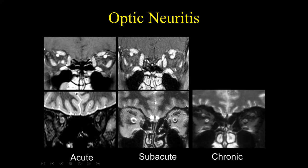Optic neuritis is associated with multiple sclerosis, and the imaging findings are somewhat similar. Acute multiple sclerosis indicates active inflammation and eventually often goes on to form gliosis — similar to what we see with optic neuritis. In the subacute phase of optic neuritis, we don't see any enhancement at all, but we do see abnormal signal involving the optic nerve and increased CSF surrounding it. The caliber of the nerve in the subacute phase is relatively normal, but we start to see increased T2 signal within the nerve and increased surrounding CSF.